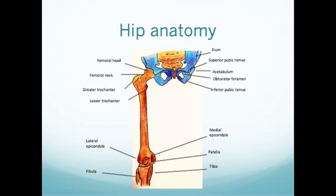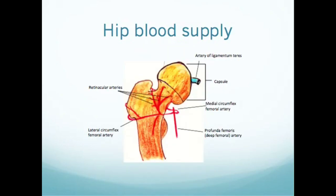The blood supply to the head of the femur is really what decides management in neck of femur fractures. It comes from the profunda femoris artery and enters along the base of the capsule where it inserts along the intertrochanteric line. If there's an intracapsular fracture, the blood supply to the femoral head is disrupted, and the head can undergo avascular necrosis — necrosing and deteriorating over a period of weeks to months until it is no longer viable.